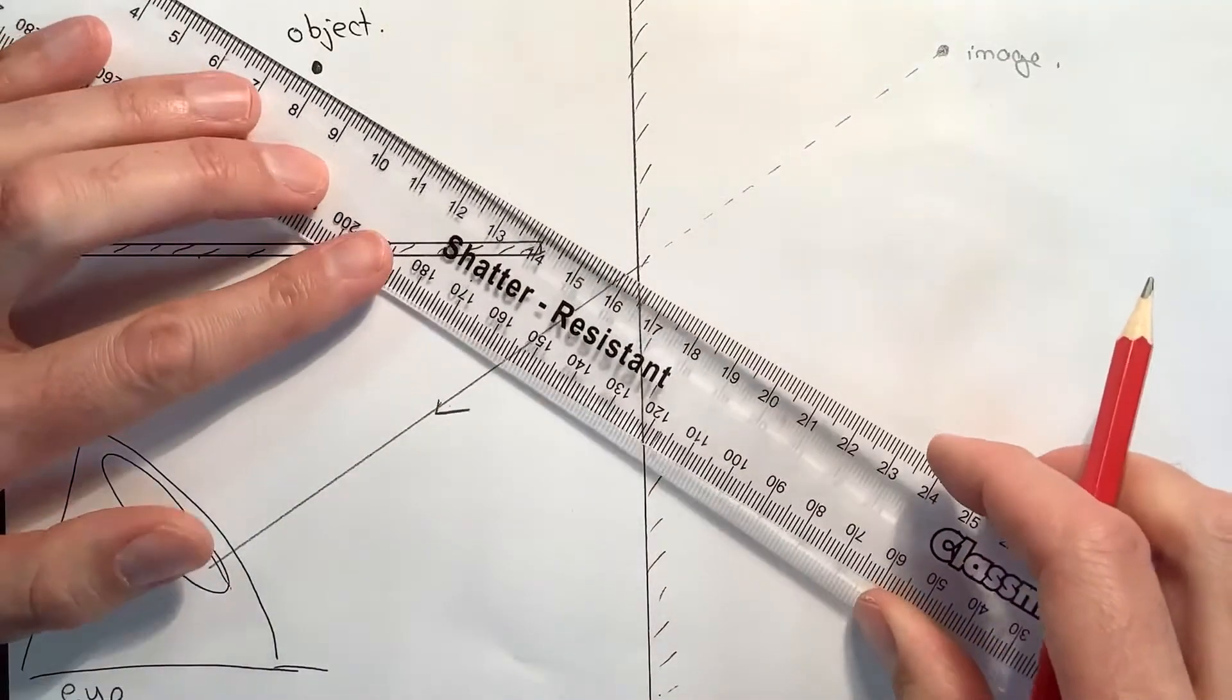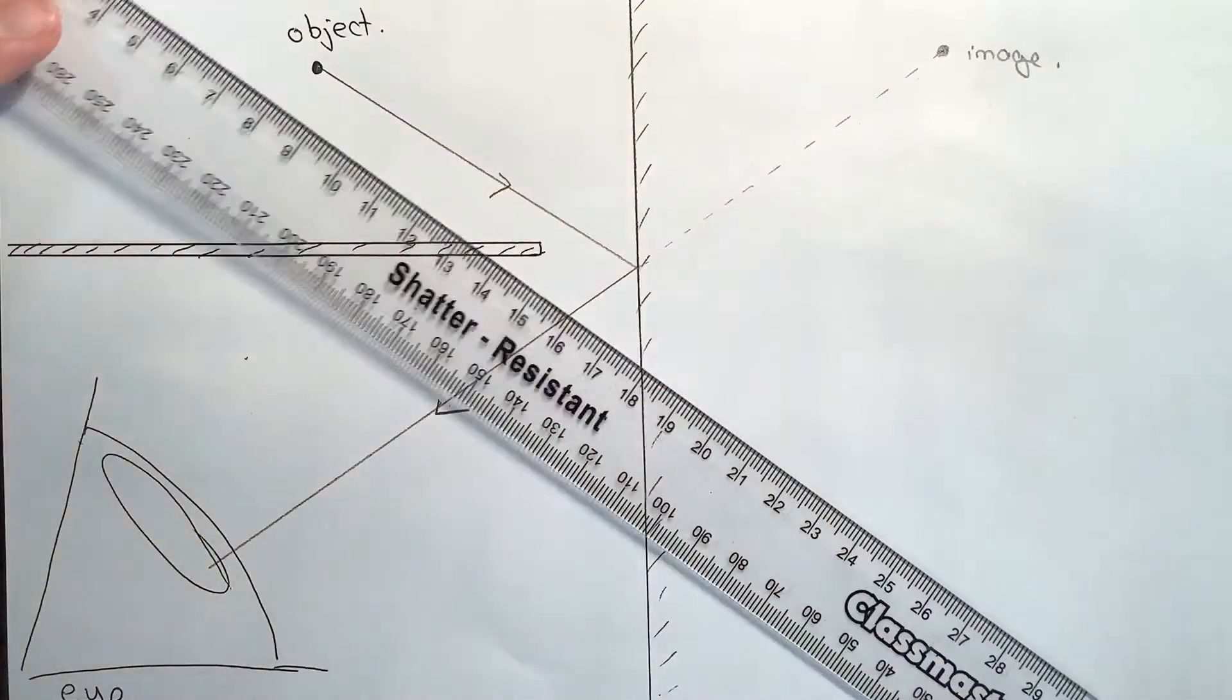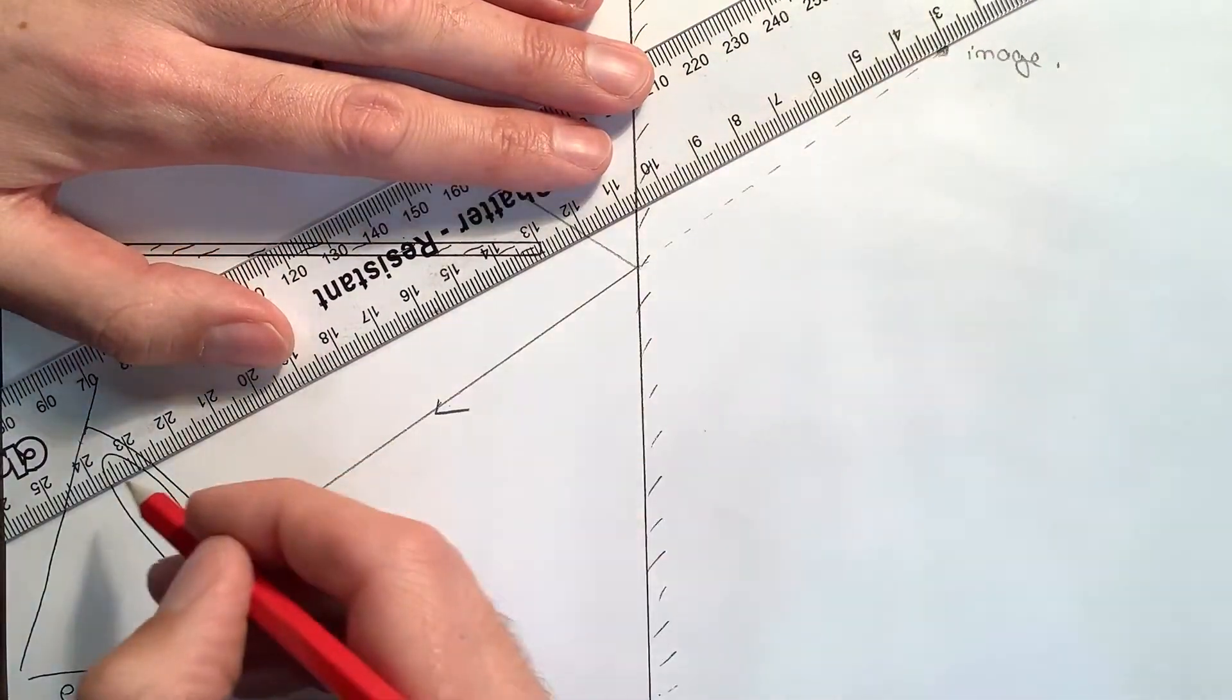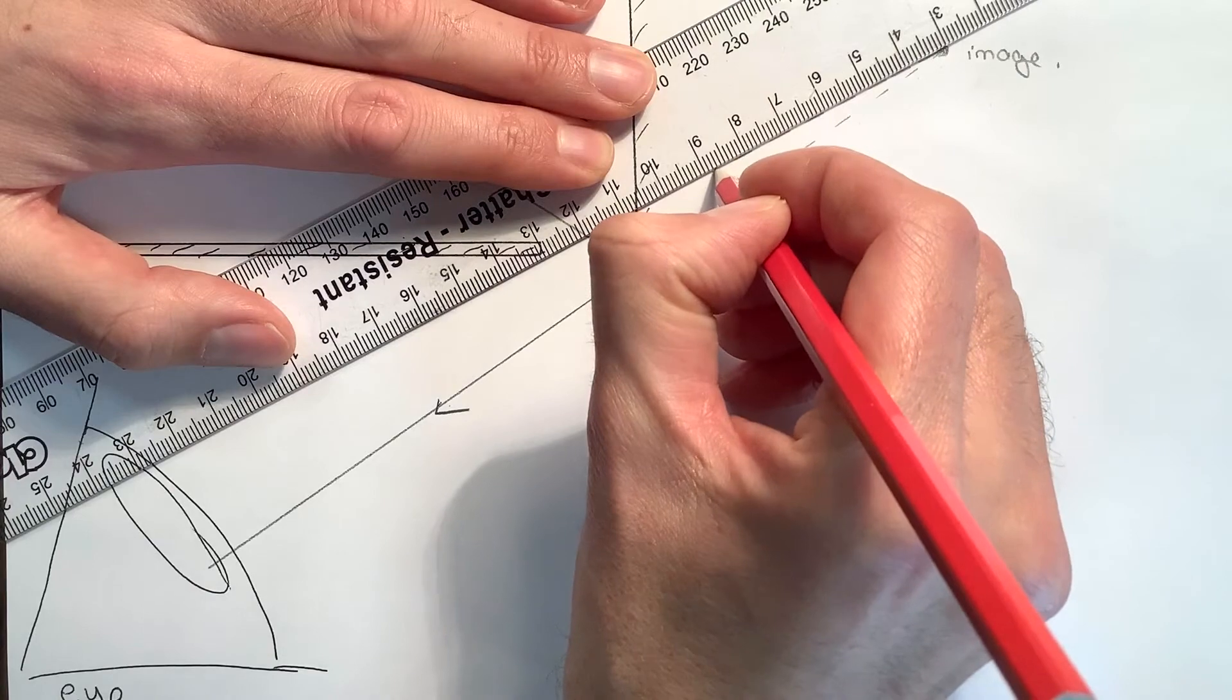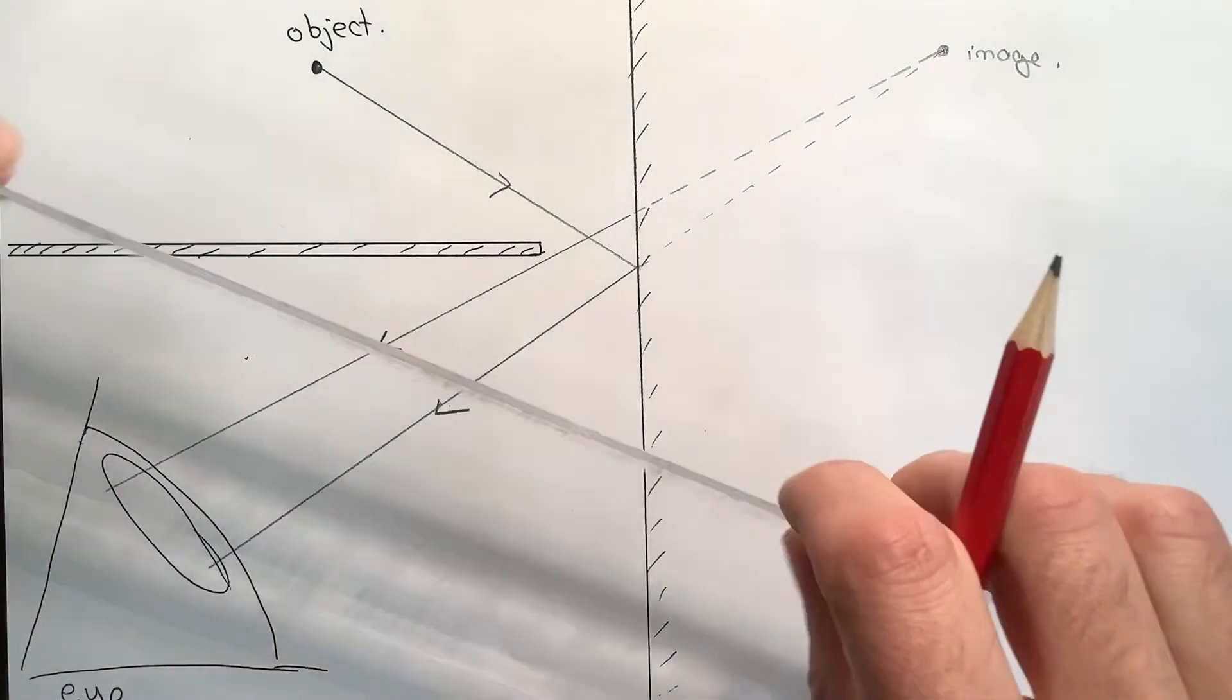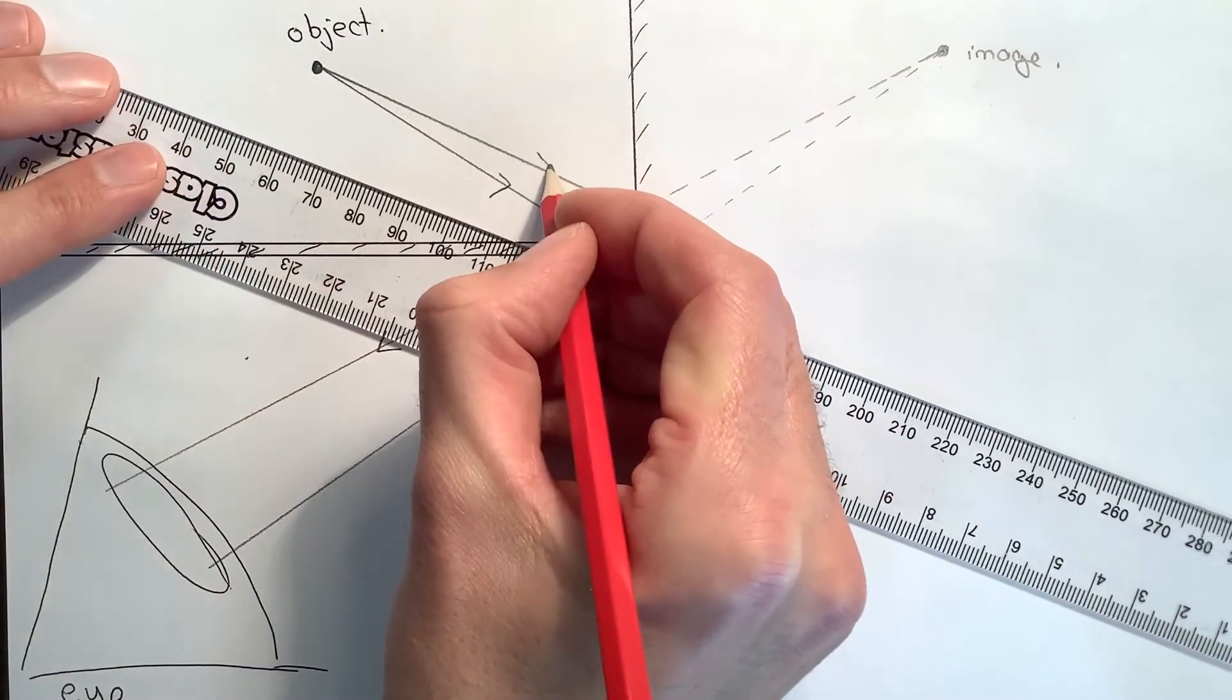I'm going to draw in the incident ray coming from the object that has created that reflected ray. And then I'm going to do that same process again for a second ray. Line up the ruler with the image and another bit of the eye, draw in a dotted virtual ray until I get to the mirror, then draw in a solid real reflected ray, and then add in the incident ray that created that reflected ray.